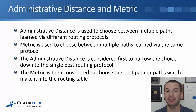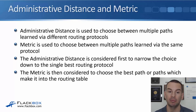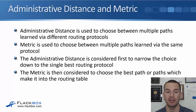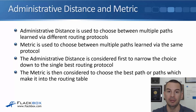Administrative distance is used to choose between multiple paths learned via different routing protocols. Metric is used to choose between multiple paths learned with the same routing protocol. The administrative distance is considered first to narrow the choice down to the single best routing protocol, and then the metric is considered to choose the best path, which will make it into the routing table.